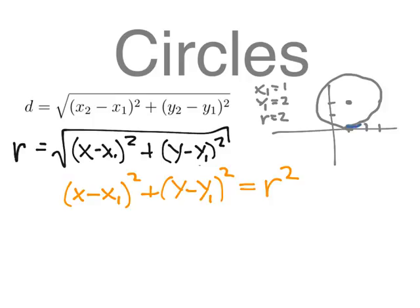So the equation for this circle, with a radius of 2 and a center at (1, 2), is (x - 1)² plus (y - 2)² equals 2², which is just 4.